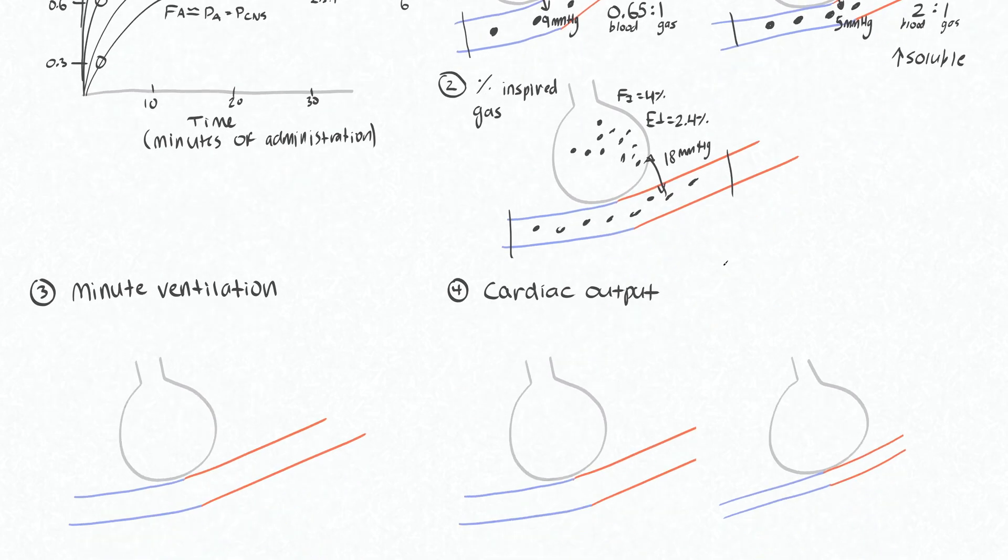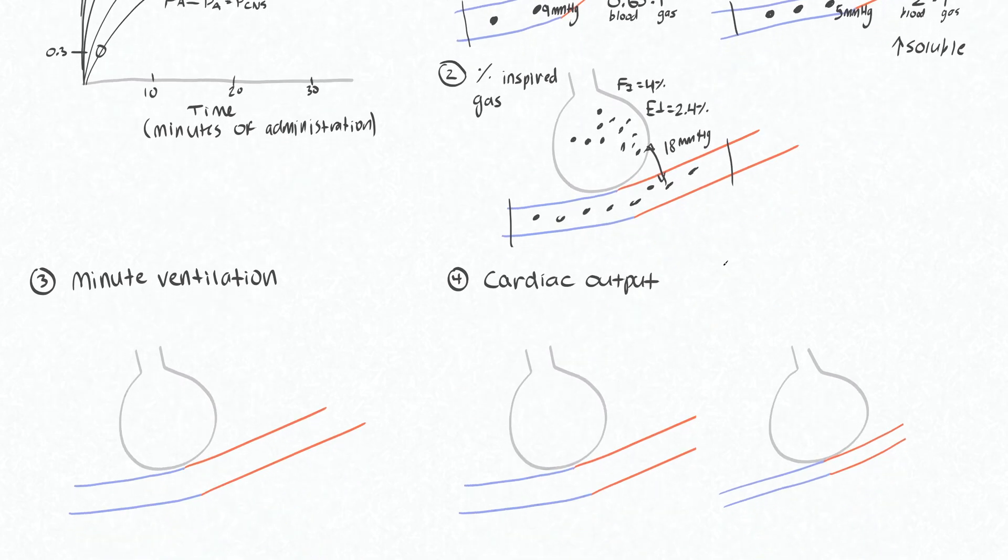Next, for increasing minute ventilation. This should be pretty intuitive, but I'll draw it out quickly for you. So let's bring in 10 particles of gas. Let's say that our blood to gas partition coefficient is 0.65, as it was in the previous example. Therefore, of these original 10, we're going to move 4 over.